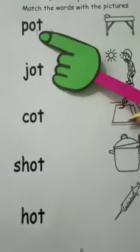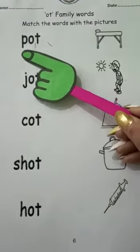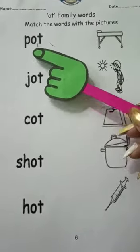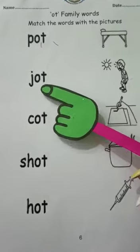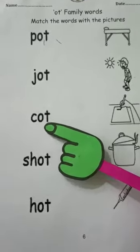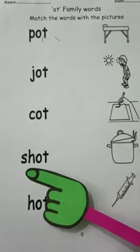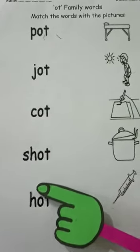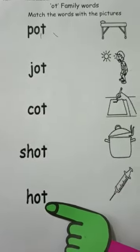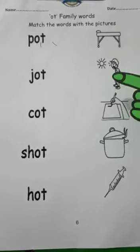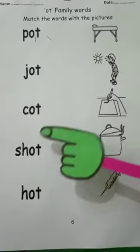So first of all, let's see. P-O-T Pot, J-O-T Jot, C-O-T Cot, S-H-O-T Shot, H-O-T Hot. And now we are going to match these words with these pictures.